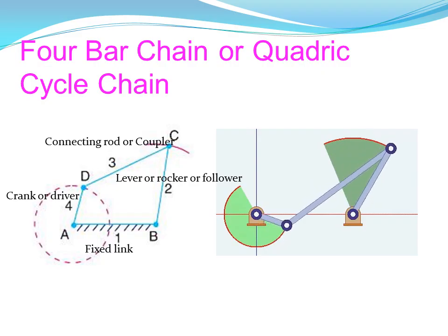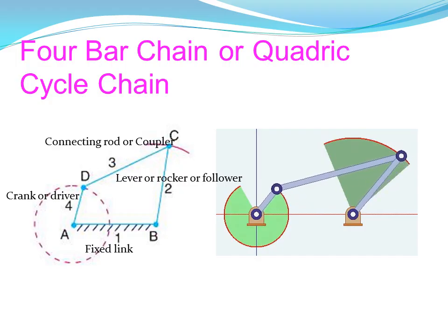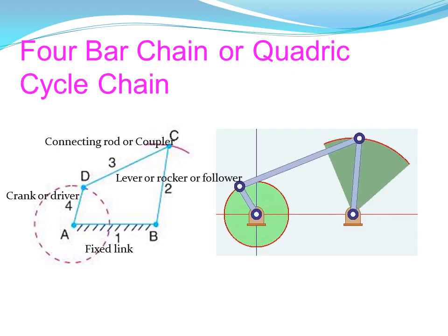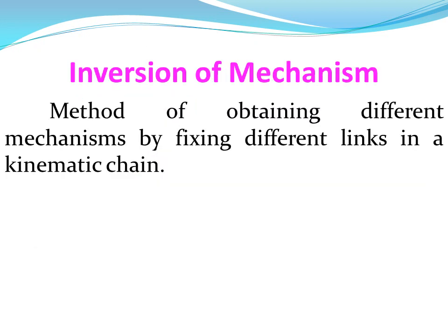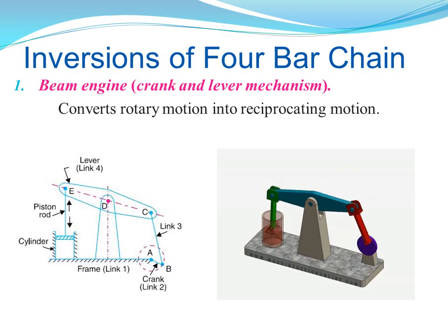This motion is called the inversion of the mechanism. So if you fix a different link — fix link 4, or fix link 3, or fix link 2 — we will get a different inversion each time. Let's discuss the Inversion of Mechanism for the 4-bar chain. In this kinematic chain, we fix one link to get the inversion of the 4-bar chain.